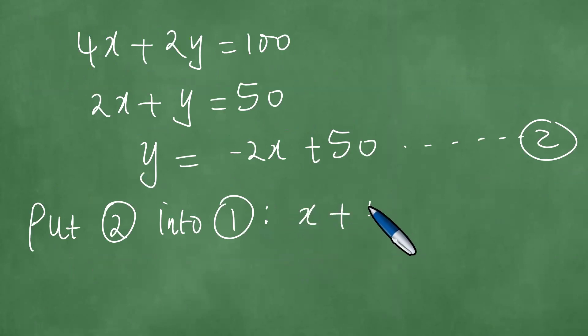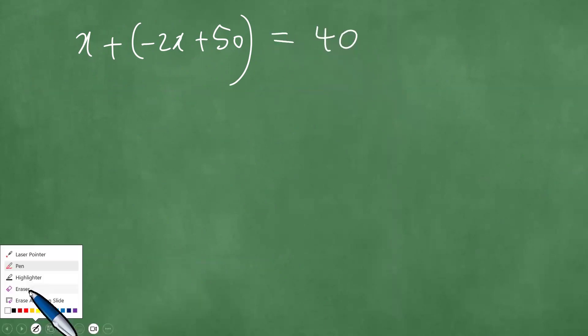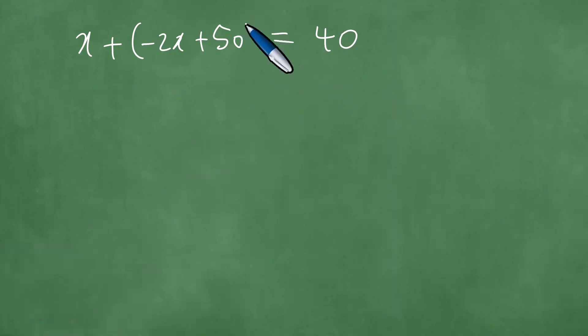We know that one is X plus Y equals 40, which is X plus the Y is minus 2X plus 50, which is 40. And then now this is X plus minus 2X plus 50, and the result equals 40. So this is what we have and we proceed to simplify this step by step.